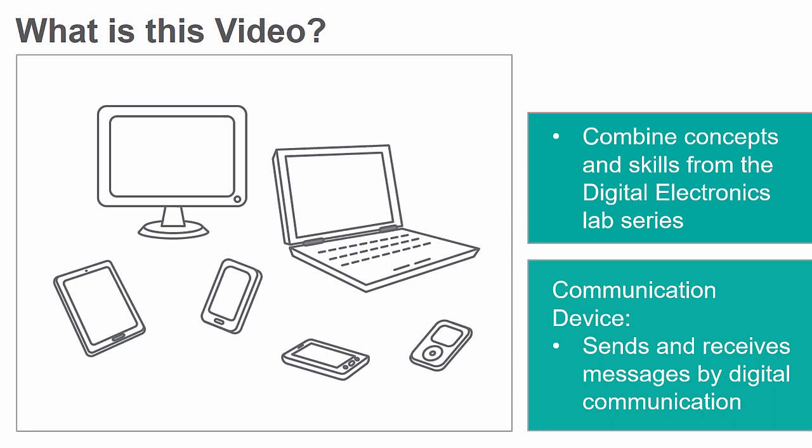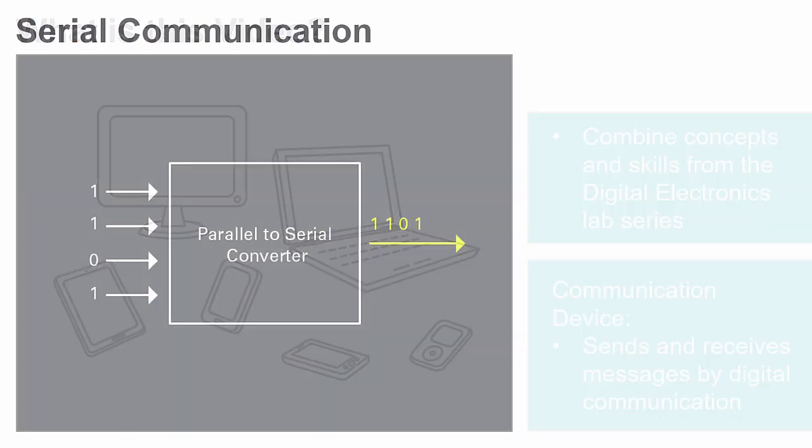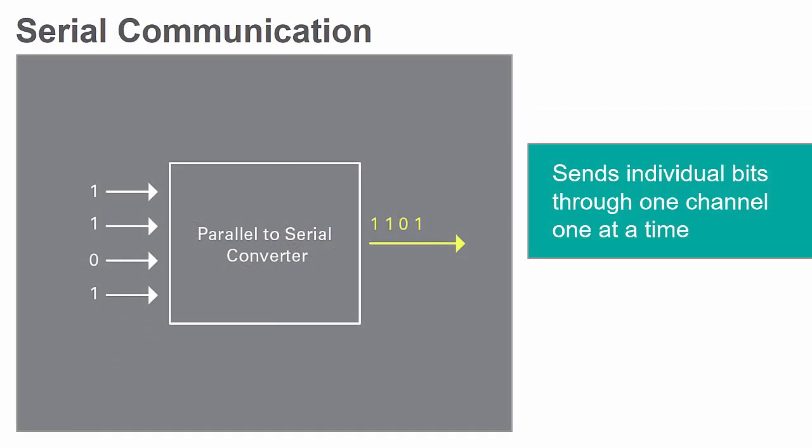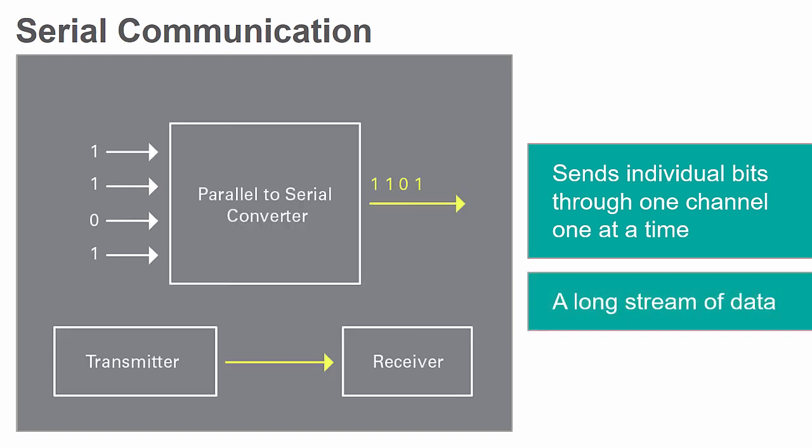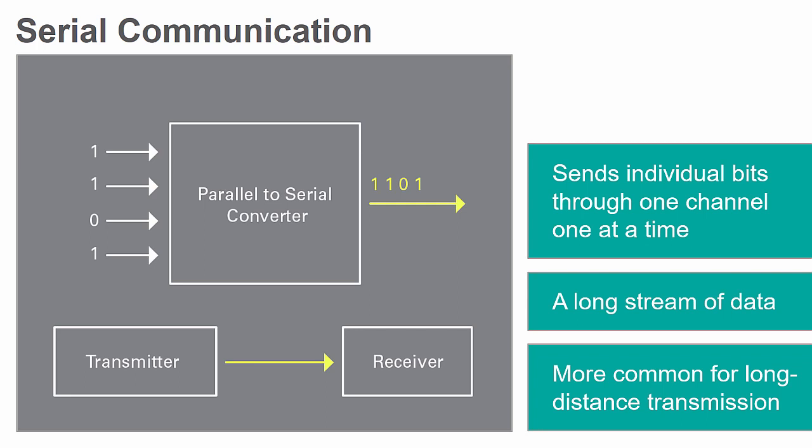A communication device is able to send and receive messages by methods of digital communication. Serial communication sends individual bits through a single communication channel one at a time, creating a long stream of data. It is more common for long distance transmission due to its low cost and faster transmission speed.